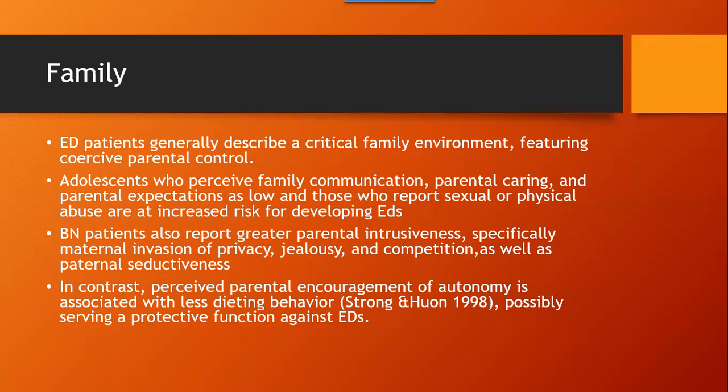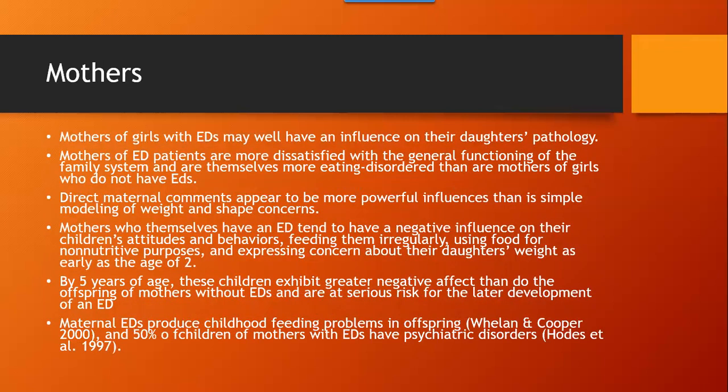Mothers of girls with eating disorders may have a significant influence on their daughter's pathology. Mothers of eating disorder patients are more dissatisfied with the general functioning of the family system and are themselves more eating disordered than mothers of girls without eating disorders. Direct maternal comments appear to be more powerful influences than simple modeling. Mothers with an eating disorder tend to have a negative influence on their children — feeding them irregularly, using food for non-nutritive purposes, and expressing concern about their daughter's weight as early as age two. By age five, these children exhibit greater negative affect and are at serious risk for later development of an eating disorder.